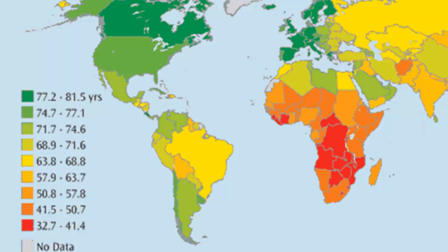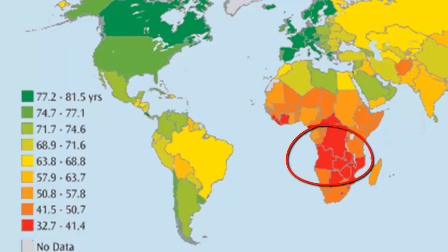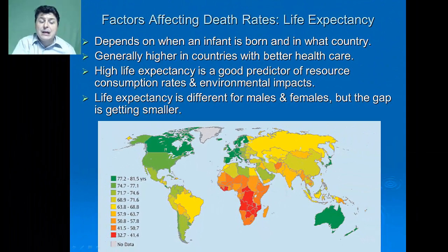For example, in the United States our average life expectancy is about 74 to 77 years. Since we live much longer, we're going to consume a lot more resources and have a greater environmental impact, while many individuals in Sub-Saharan Africa only live between 32 to 41 years of age. Life expectancy is different in males and females, but the gap is getting smaller.